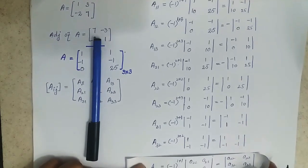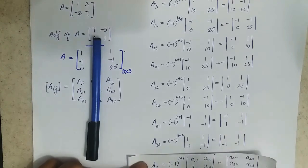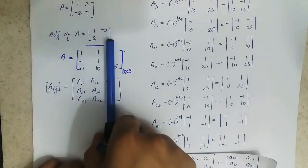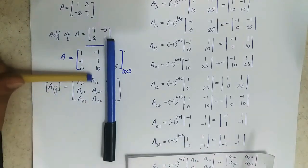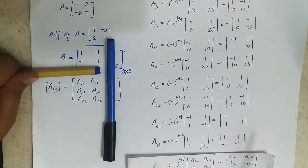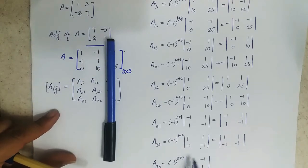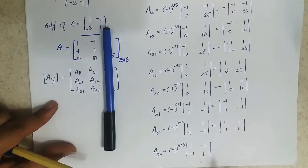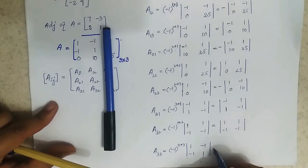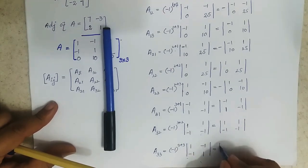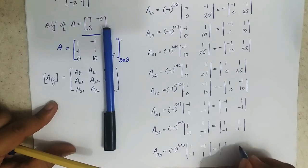For A33, the third row, third column element: the inside elements are 1, minus 1, minus 1, 1. The power is even, so the outside sign will be positive.